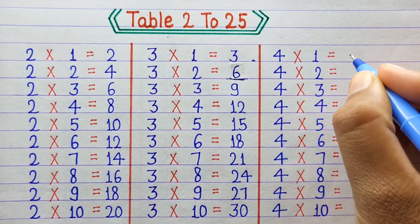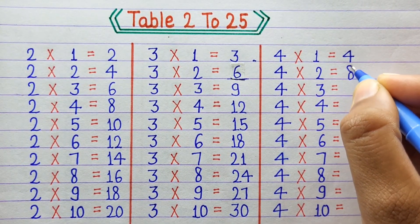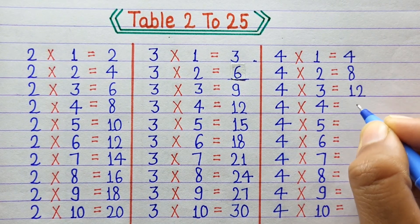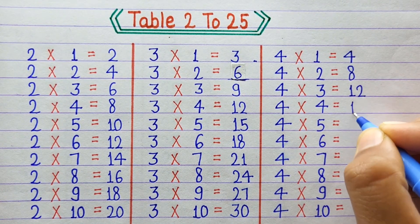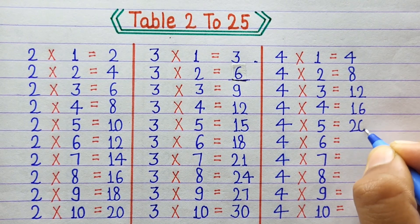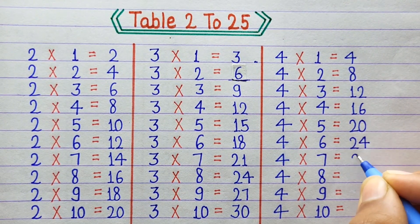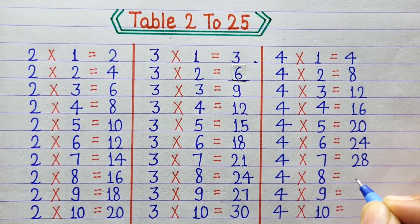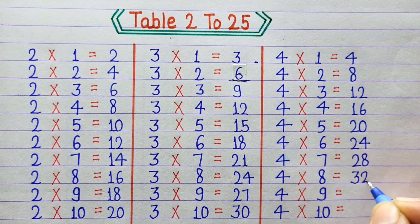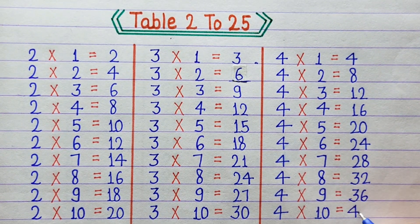4×1=4, 4×2=8, 4×3=12, 4×4=16, 4×5=20, 4×6=24, 4×7=28, 4×8=32, 4×9=36, 4×10=40.